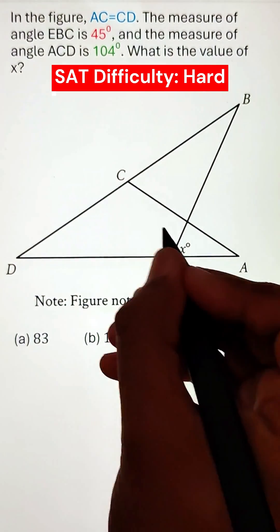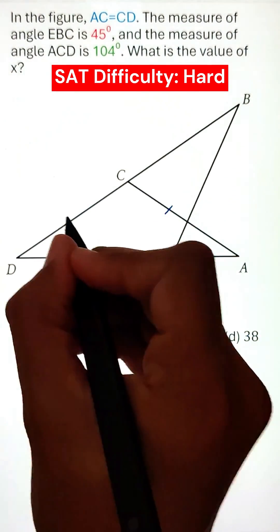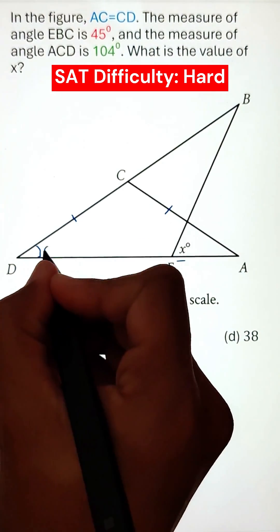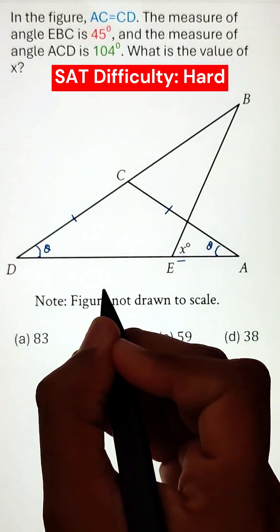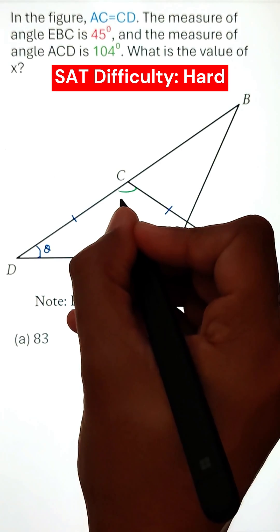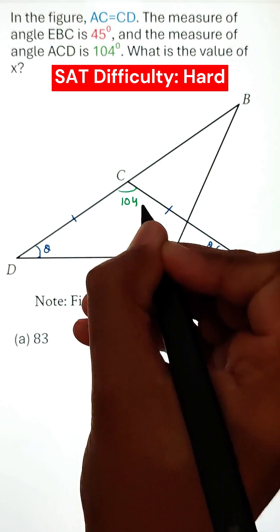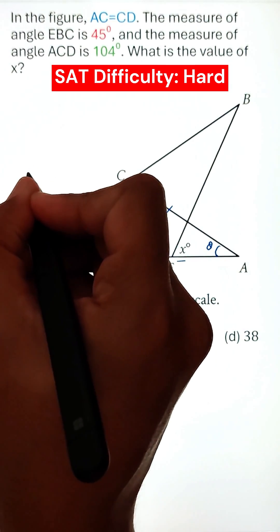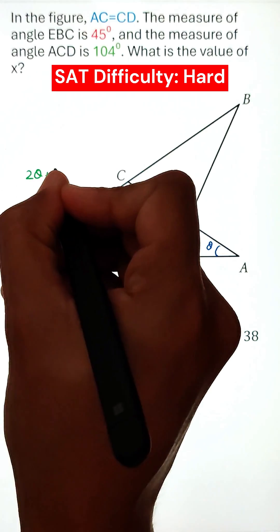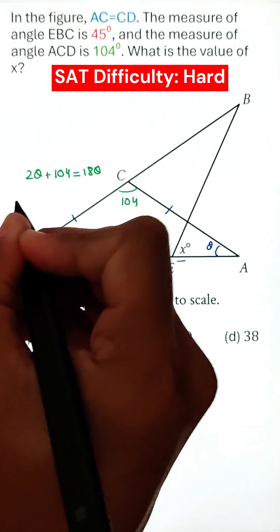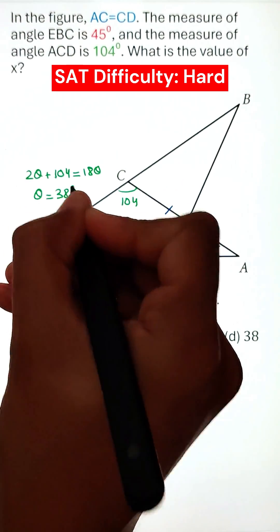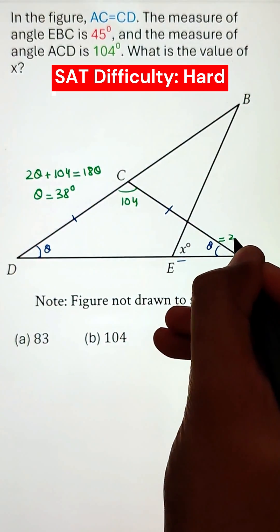To find the angle X given in the figure, we know that sides AC and CD are equal to one another, which means that the angles opposite to these sides will also be equal. Knowing the property that the sum of three angles is equal to 180, we can solve for this angle, coming around 38 degrees.